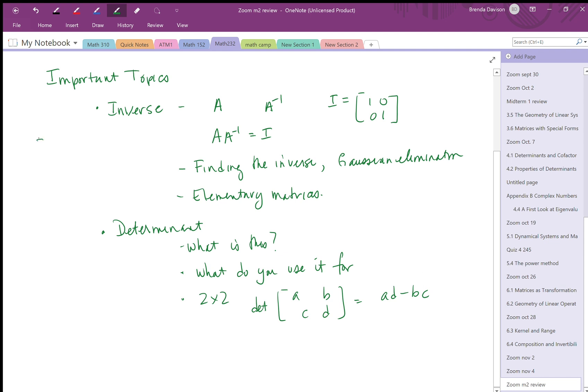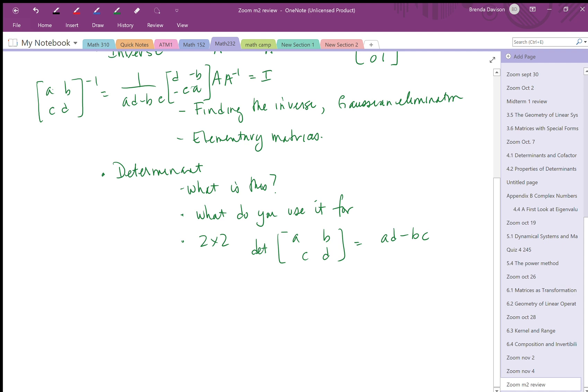The inverse of a 2 by 2 matrix [a,b; c,d] is 1 over (ad minus bc) multiplied by [d,-b; -c,a]. We have those 2 by 2 cases, which are simple for both. We can calculate the determinant for larger matrices using a cofactor expansion.